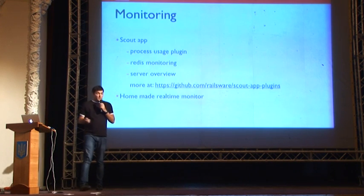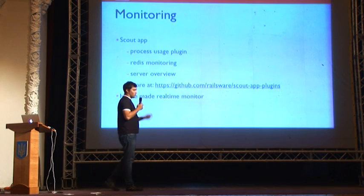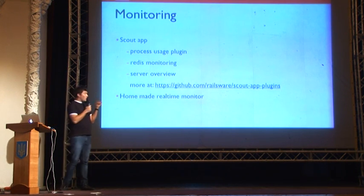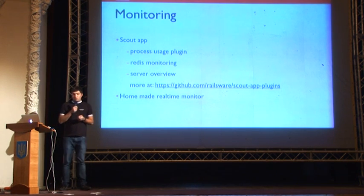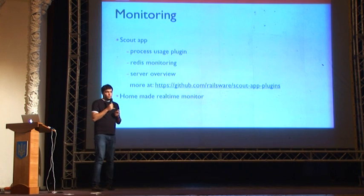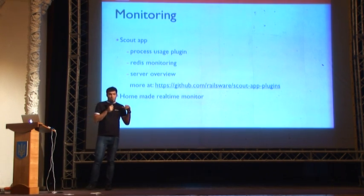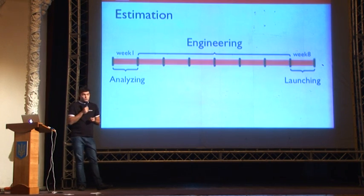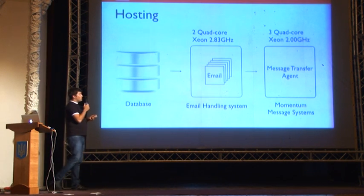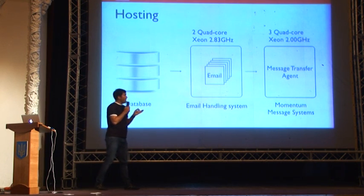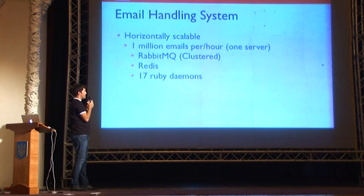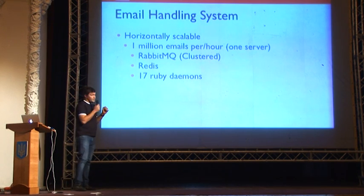We switched to the new system and started monitoring using Scout, with both standard plugins and custom Railsware-made plugins available on the Railsware GitHub account. We also built a homemade real-time monitoring tool with a dashboard widget showing live system load. It took eight weeks total to implement the system. Our hosting setup uses three quad-core servers for the message transfer agent and two quad-core servers for the email handling system, each running RabbitMQ, Redis, and 17 Ruby daemons.